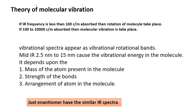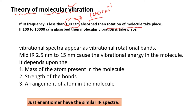Now we discuss the theory of molecular vibration. If IR radiation is absorbed at a frequency of around 100 per centimeter, rotation of the molecule occurs. If the frequency of absorbed IR radiation is in the range of 100 to 10,000 per centimeter, then molecular vibration occurs. The resulting spectrum, as previously discussed, is a vibrational-rotational spectrum.